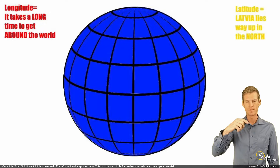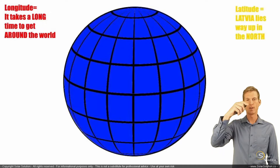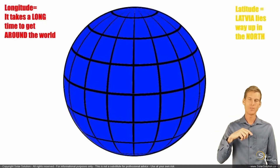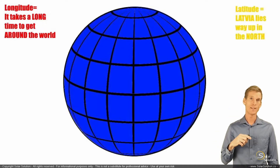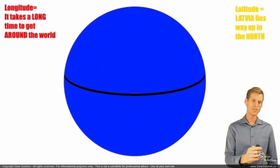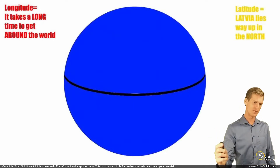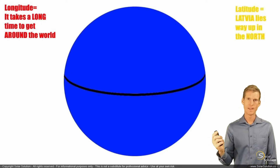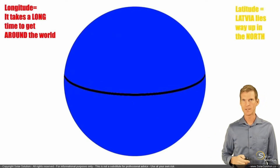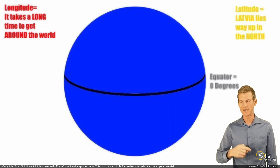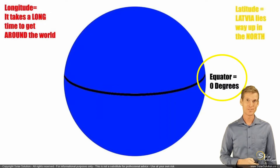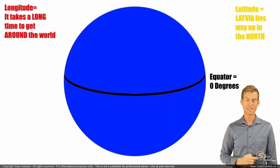The latitude, by means of how far north or south you are, is 0 degrees right at the equator. So, the central ring — if you draw a central ring around the planet — that is the equator, and the equator is exactly at 0 degrees latitude.